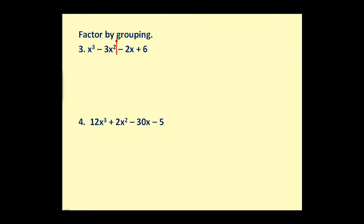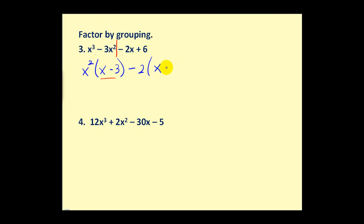Let's try another example. Step one, divide it in half, making sure we include the minus sign with the second half. The GCF of the first two terms is x squared, leaving us with x minus three. For the second product, if we factored out just two we'd have a negative x plus three, which won't match this binomial. So we factor out a negative two instead, giving us a positive x and changing the sign of six to give minus three. This matches the pattern — we have a binomial factor of x minus three — so we factor that out, leaving us with x squared minus two.